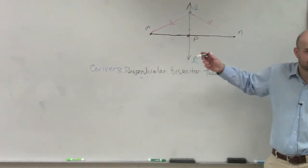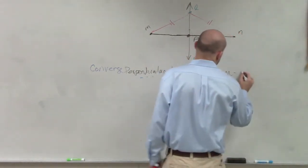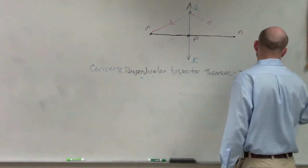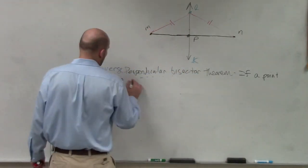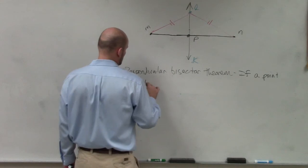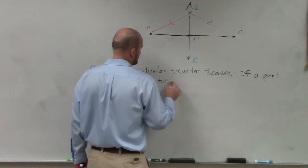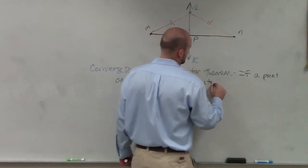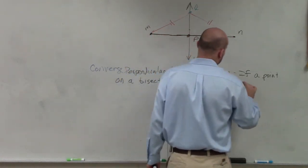We don't know if it's 90 degrees yet. So if a point on a bisector is equidistant to the endpoints,